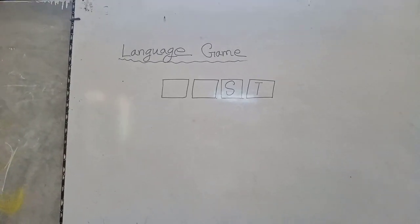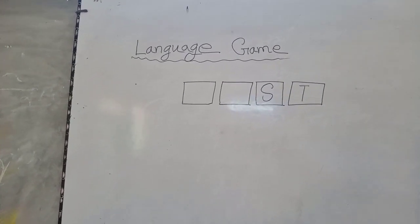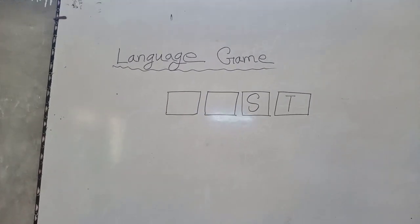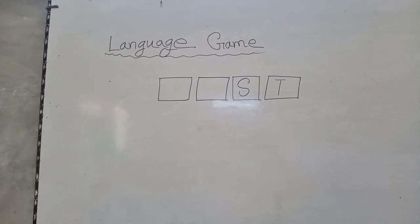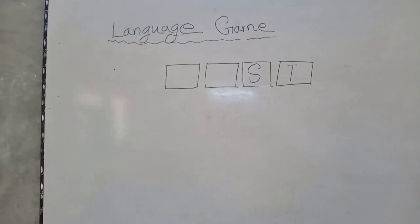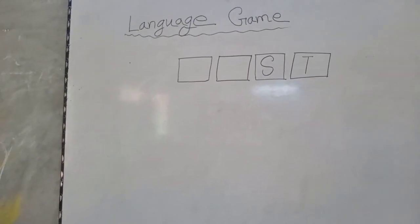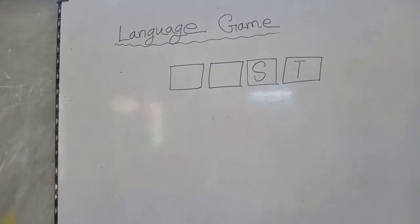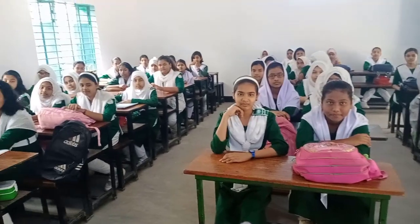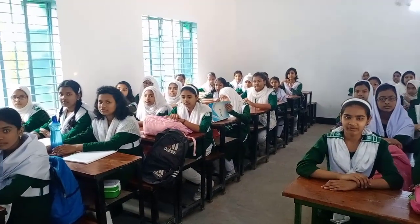In today's class we will play a language game. On your whiteboard there are four boxes, and the last two boxes have two letters: S and T. You have to complete the first two vacant boxes. After that, you will make a new sentence with that word.